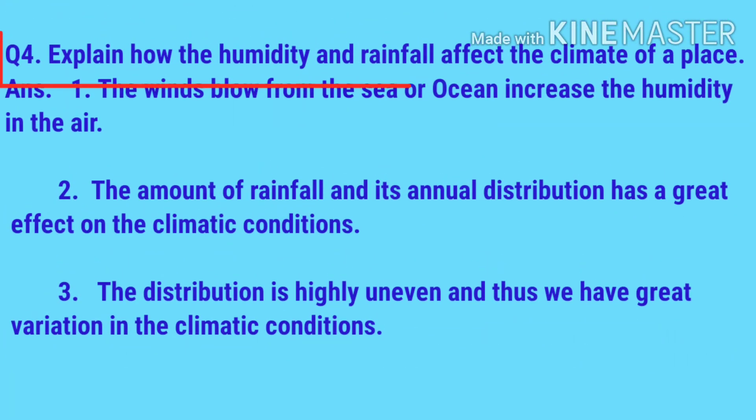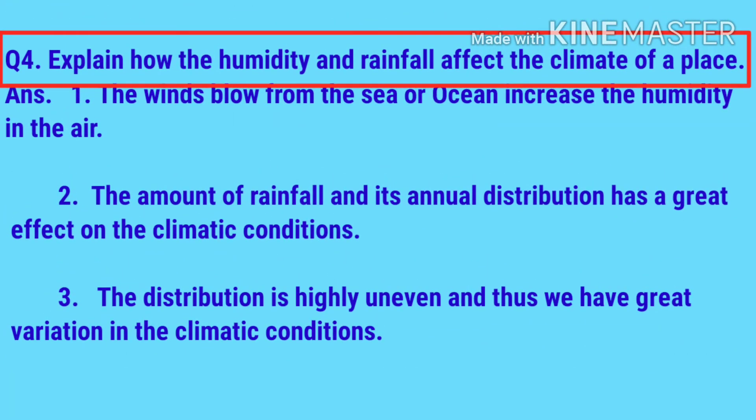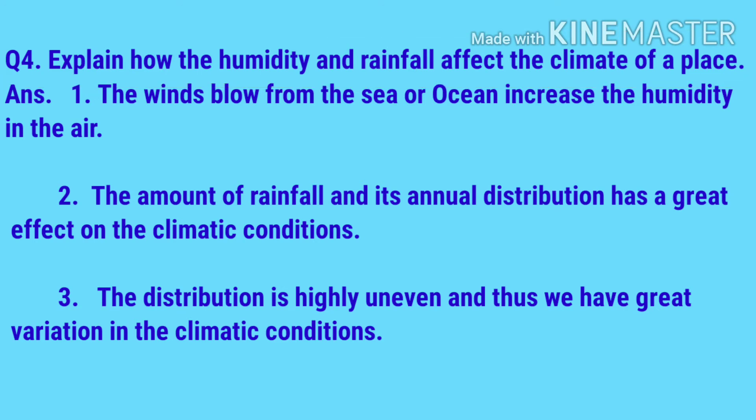Question number four: explain how humidity and rainfall affect the climate of a place. Winds that blow from the sea or ocean increase the humidity in the air. The amount of rainfall and its annual distribution has a great effect on climatic conditions. The distribution is highly uneven, and thus we have great variation in climatic conditions.